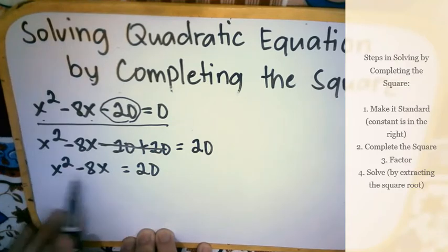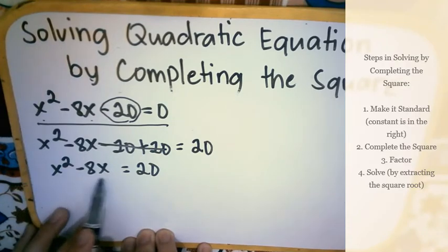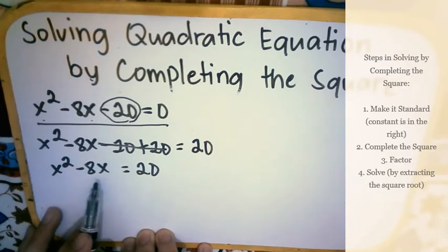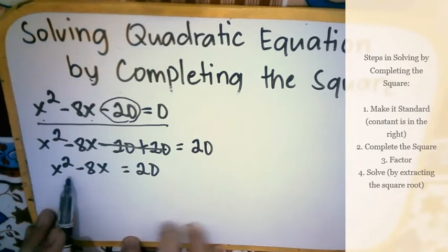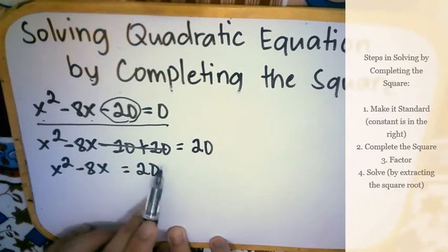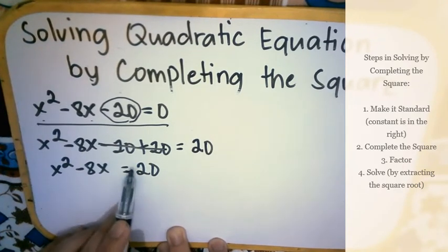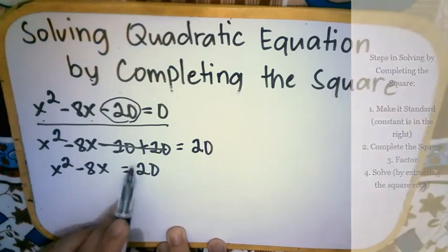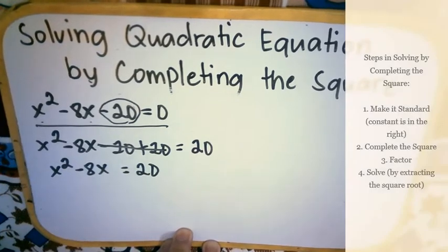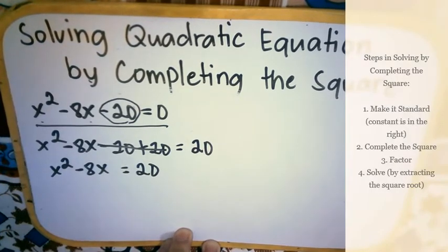x squared minus 8x — still in descending order. So it looks like standard form, and the constant has moved to the right. We are done with our first step.